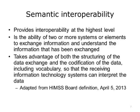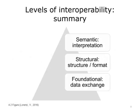Finally, we have semantic interoperability. This provides interoperability at the highest level, which is the ability of two or more systems to exchange information and to understand the information being exchanged. It takes advantage not just of the data structure, but also the codification of the data, including terminology, so the receiving information technology system can interpret that data. This diagram summarizes the three levels of interoperability and each of their primary characteristics.